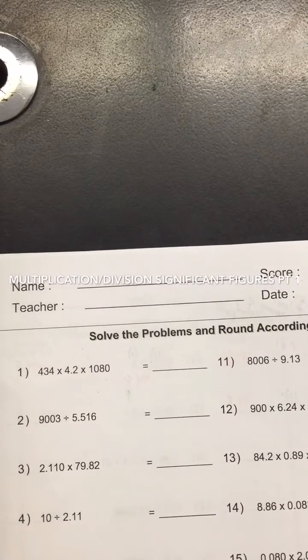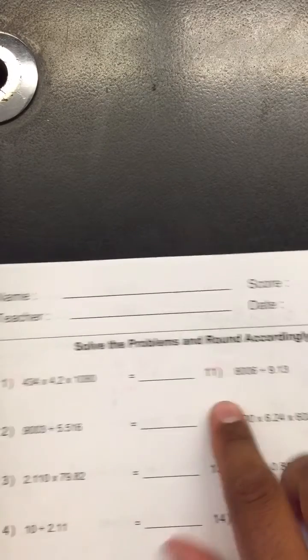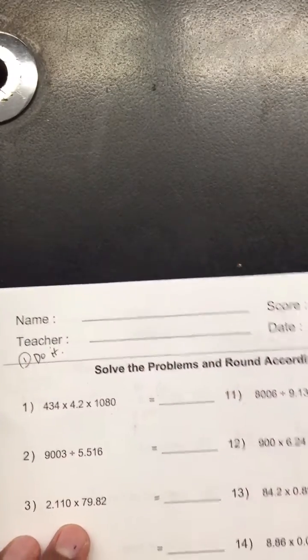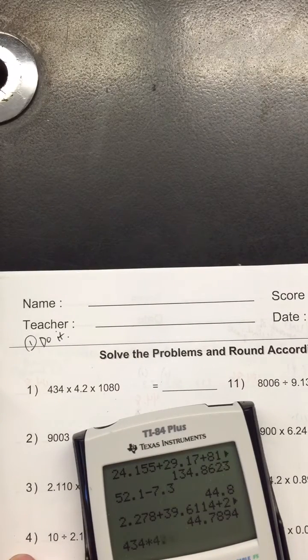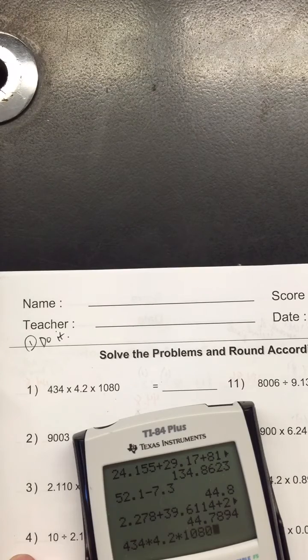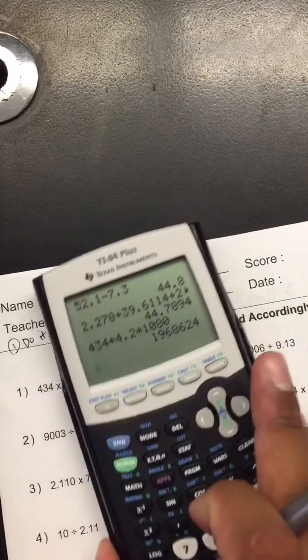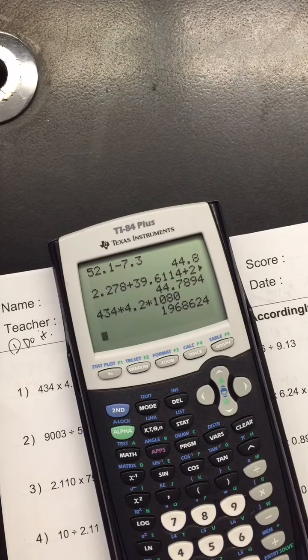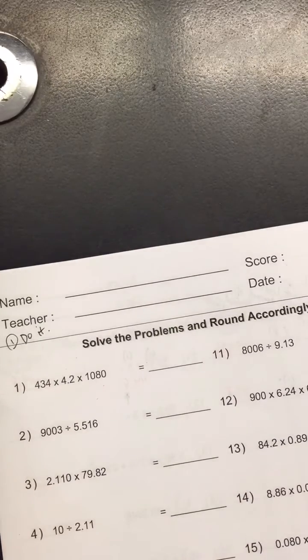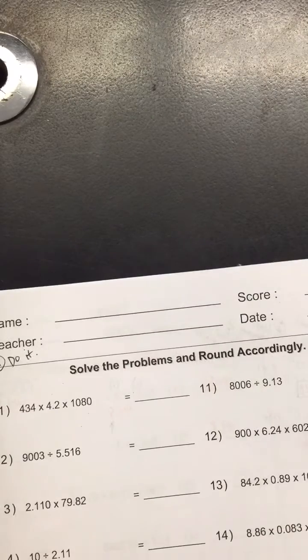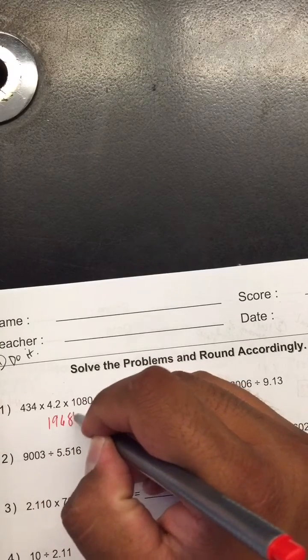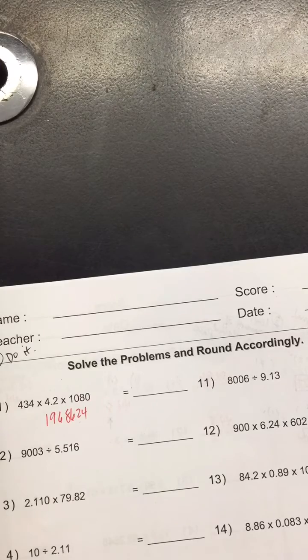Lastly is this one right here. Same thing, the only difference is you're multiplying and dividing. So again, you're gonna do the calculation. We're gonna say 434 times 4.2 times 1080 and then we're gonna get an answer. If you notice, my answer is 1,968,624. So looking at this answer, you're gonna write it down here at the bottom and it's gonna be 1968624.